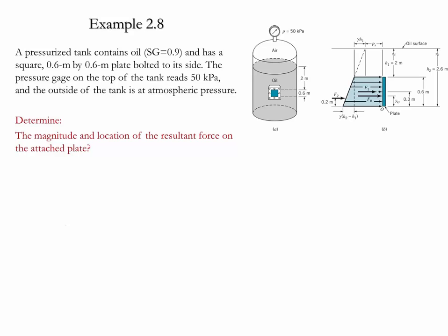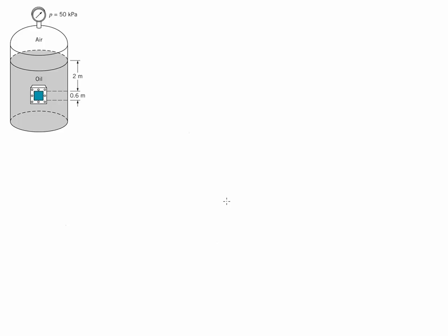The pressure gauge at the top of the tank reads 50 kilopascals and the outside of the tank has atmospheric pressure. We need to determine the magnitude and the location of the resultant force that is applied on the attached plate. In order to evaluate this case we're going to use the prism method, and the main reason is because the pressure at the interface is not equal to zero.